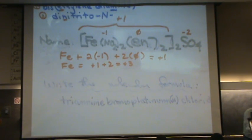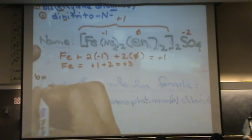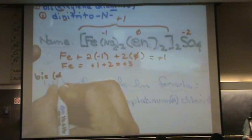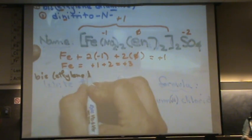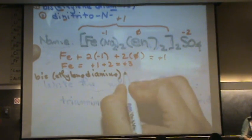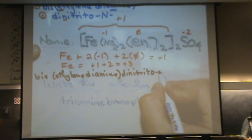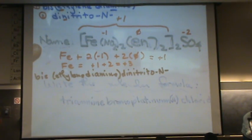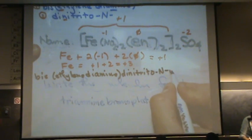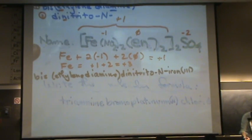Okay, so let's put this together, get a different color pen, here we go. This would be, remember the ligands go first in alphabetical order, bis(ethylenediamine), close parenthesis, still one word, di-nitrido, still one word, dash N dash, still one word, and now I get to the iron, iron, three, because it's a positive three charge. Now we finally have a space. Space, sulfate.